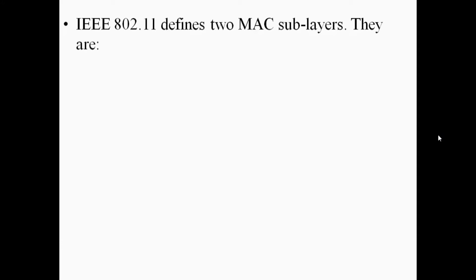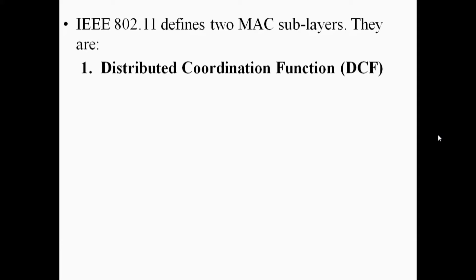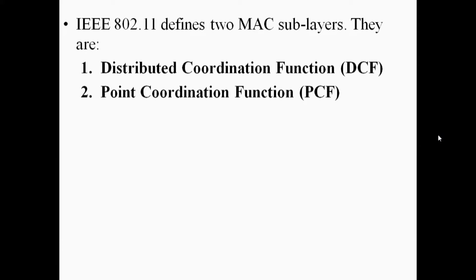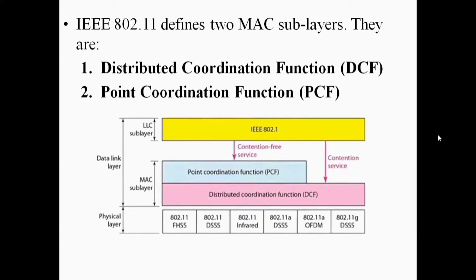IEEE 802.11 defines two MAC sublayers: 1. Distributed Coordination Function DCF, and 2. Point Coordination Function PCF. Figure 1 shows MAC layers in the IEEE 802.11 standard, where you can see these two MAC sublayers — Distributed Coordination Function DCF and Point Coordination Function PCF.